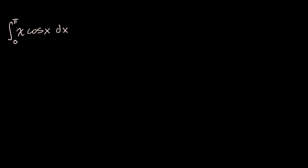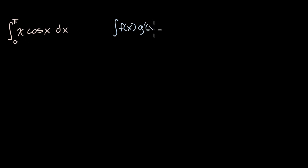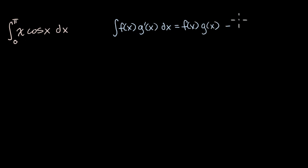So let's just remind ourselves about integration by parts. If I have the integral — and I'll just write this as an indefinite integral, but here we want to take the indefinite integral and then evaluate it at pi and at zero — so if I have f of x times g prime of x dx, this is going to be equal to — and in other videos we prove this, it really just comes straight out of the product rule from differential calculus — f of x times g of x, minus the integral of f prime of x times g of x dx.